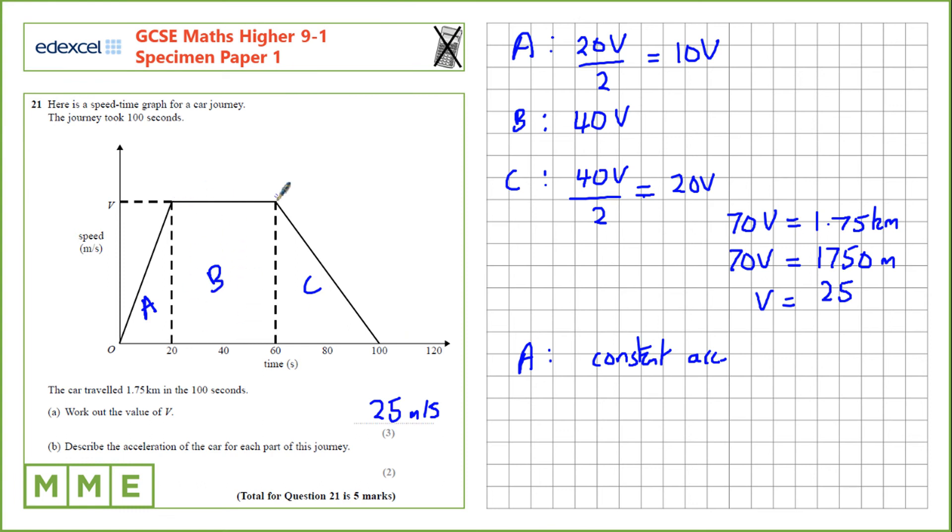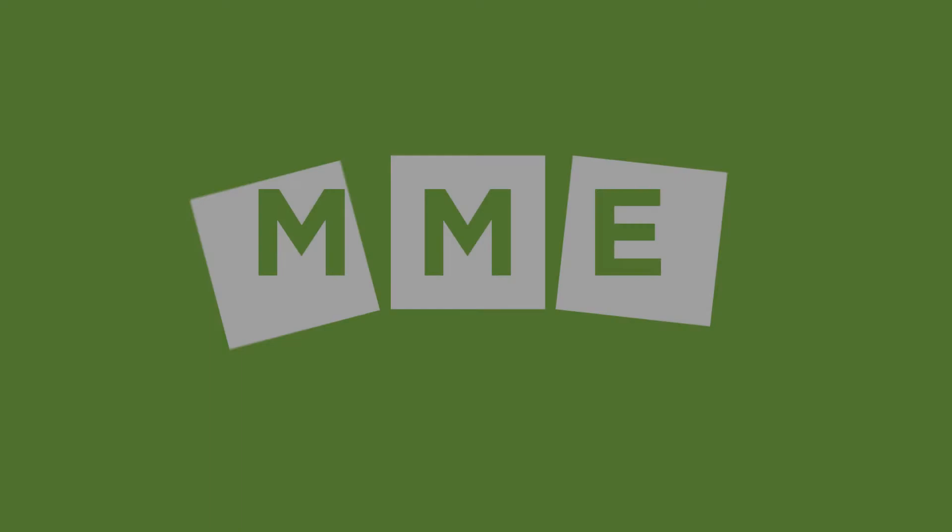For B, the speed stays the same the entire time and a constant speed means there's no acceleration. And for C, the speed is decreasing at the same rate over the entire time period, so that's constant deceleration.